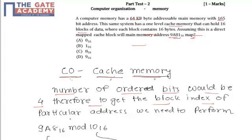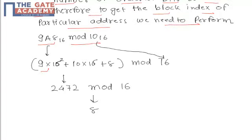index of a particular address, we need to perform 9A8₁₆ mod 10₁₆. If you convert this into decimal, that is 9 × 16² + (A is 10) × 16 + 8, and for the modulo, if you convert 10₁₆